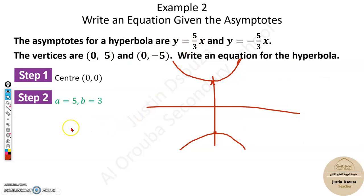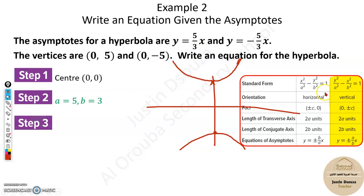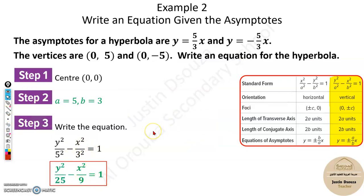Now you can put it in the equation. This is the standard form. Write it over here—just substitute it. y² divided by a², which is 25, minus x² by 3². This would be the answer. So it is very straightforward and easy.